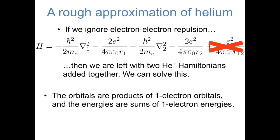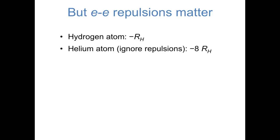Let's summarize what this tells us. If we can write our Hamiltonian operator as the sum of two different Hamiltonian operators that we can solve, then the orbitals are products of the one-electron orbitals, and the energies are sums of the one-electron energies. So what does this tell us about the ground state energy of a helium atom? It tells us that if we know the energy of a ground state helium-plus cation, we can just multiply that energy by 2 to get the approximate energy of a helium atom. We know from the Rydberg equation that the ground state energy of a hydrogenic species is negative z-squared times the Rydberg constant. So for helium-plus it's negative 4 times the Rydberg constant, and for a helium atom — ignoring electron-electron repulsion — the approximate energy is negative 8 times the Rydberg constant.